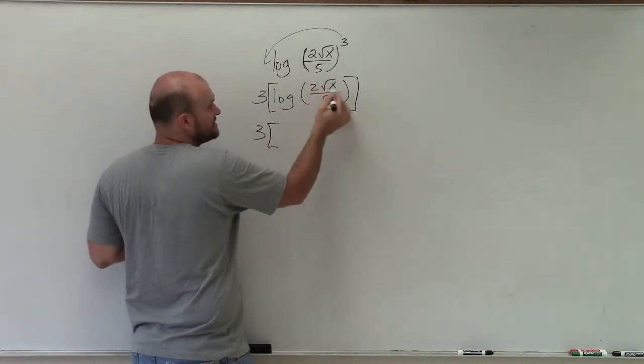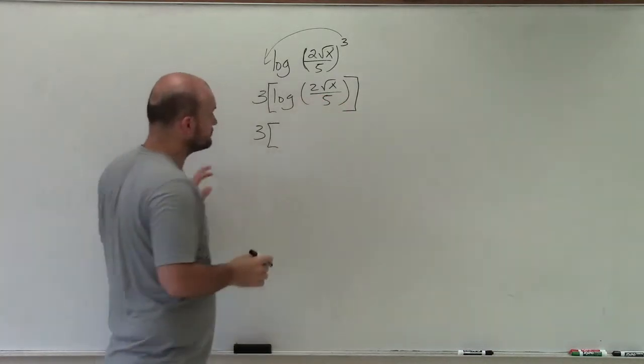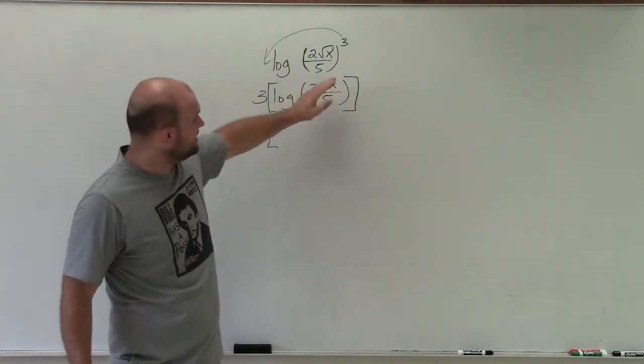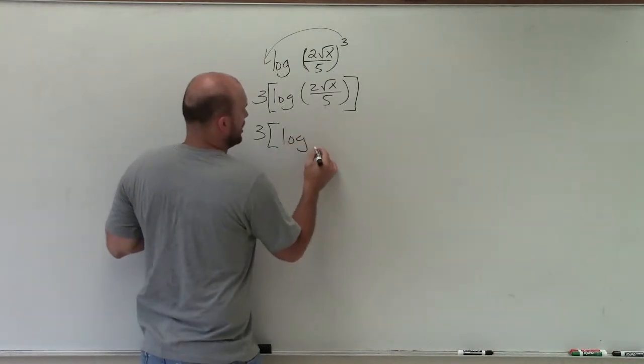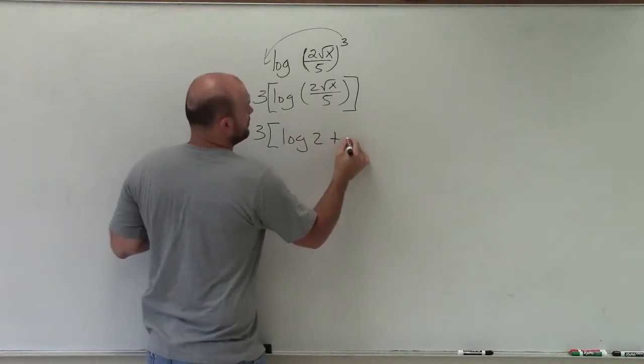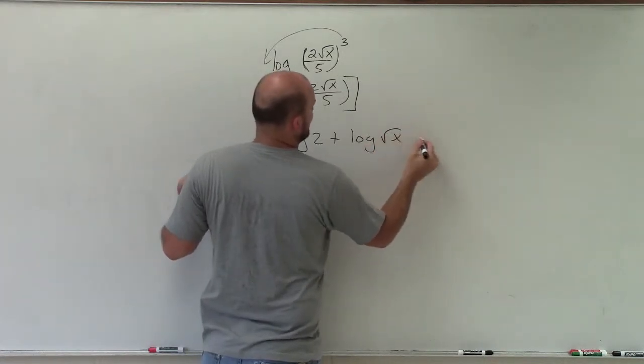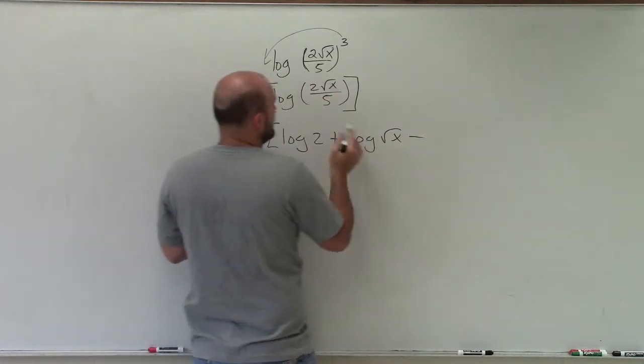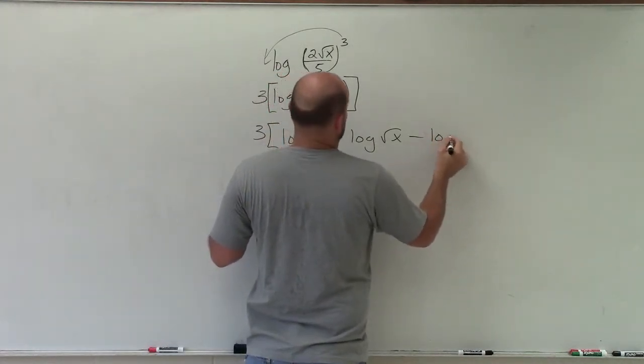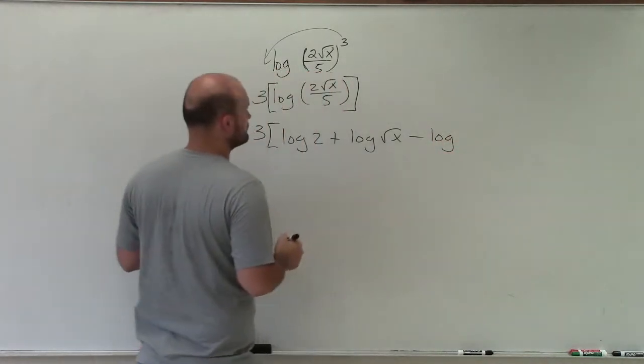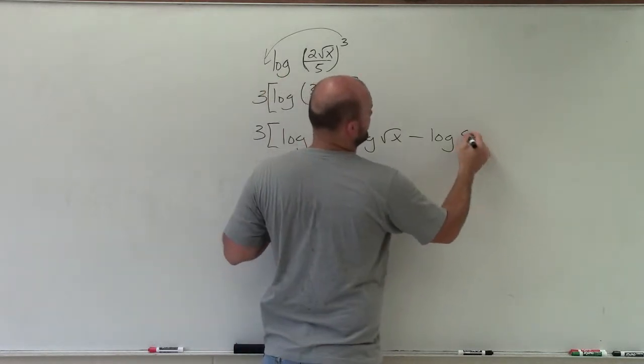The first one I'm going to do is I have the product being divided by 5. So therefore, I can simply write log base 10 of 2 plus log of the square root of x minus, working left to right, and all of that is divided by log base 10 of 5.